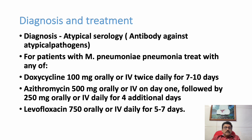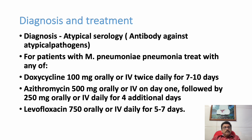Levofloxacin is a respiratory quinolone given at 750 mg orally or IV for 5 to 7 days. It acts against almost all types of respiratory pathogens — gram-positive cocci, gram-negative organisms, anaerobes, and atypical organisms. That is why most guidelines recommend it. However, levofloxacin is a second-line anti-tubercular drug, and its use must be considered carefully.